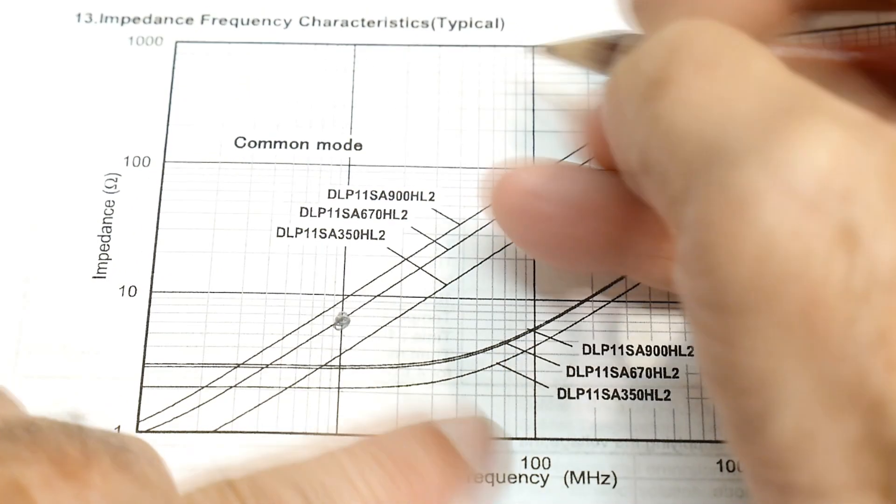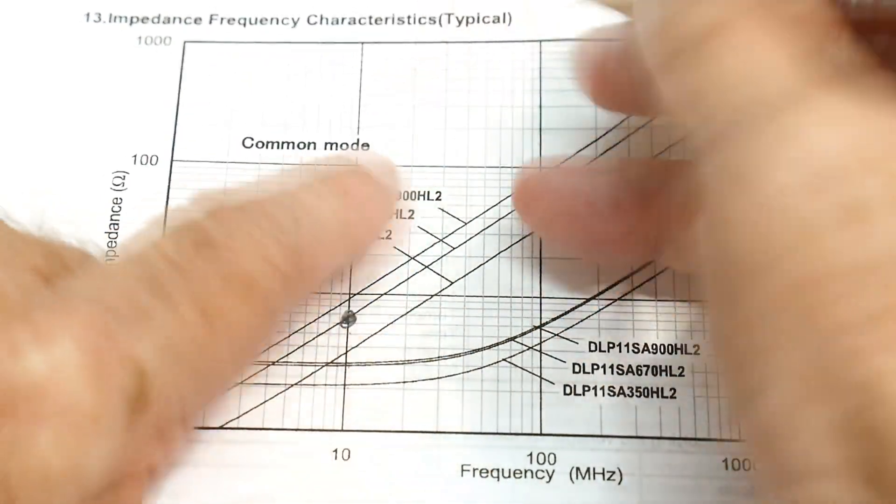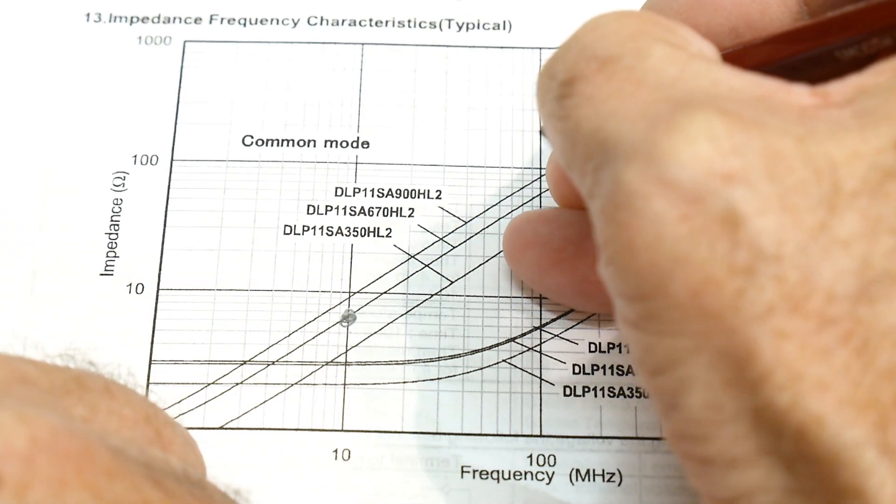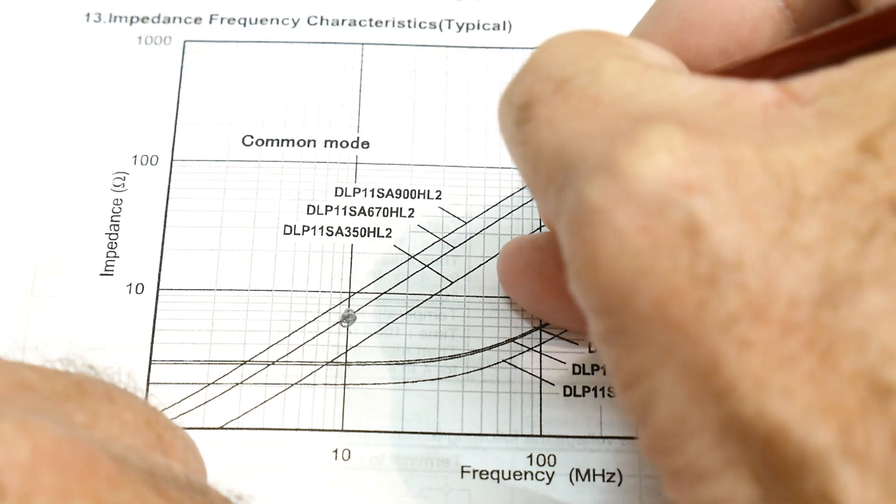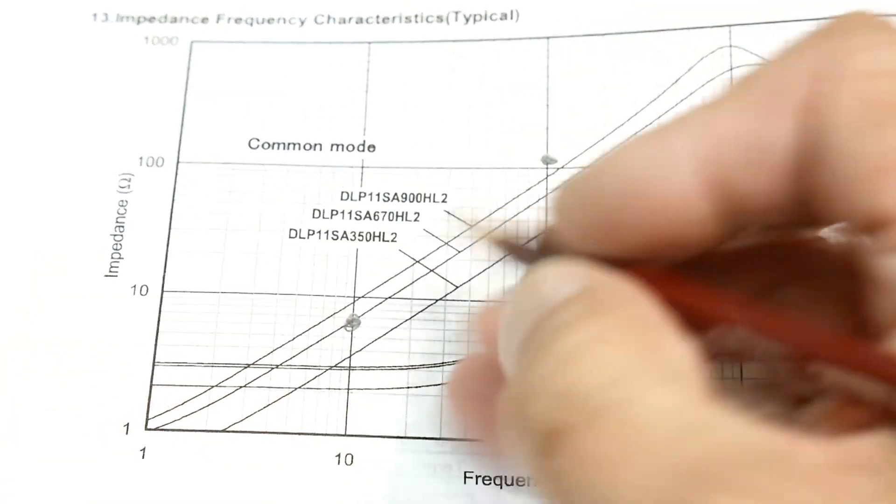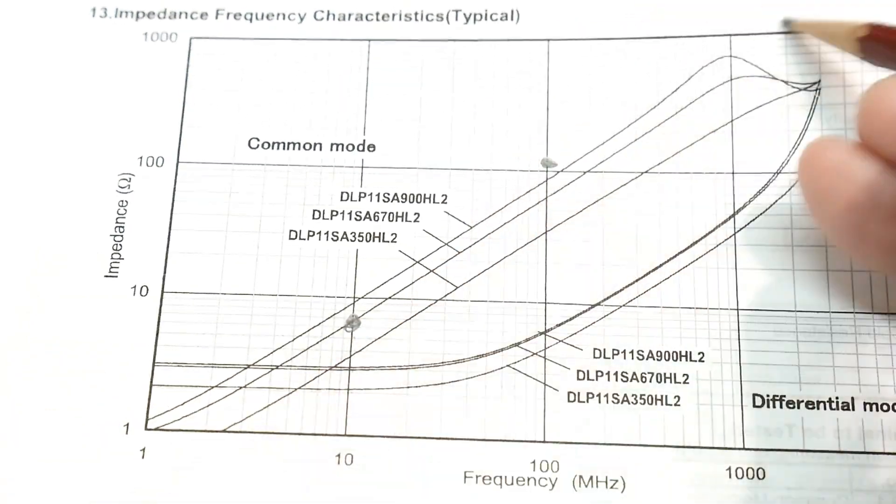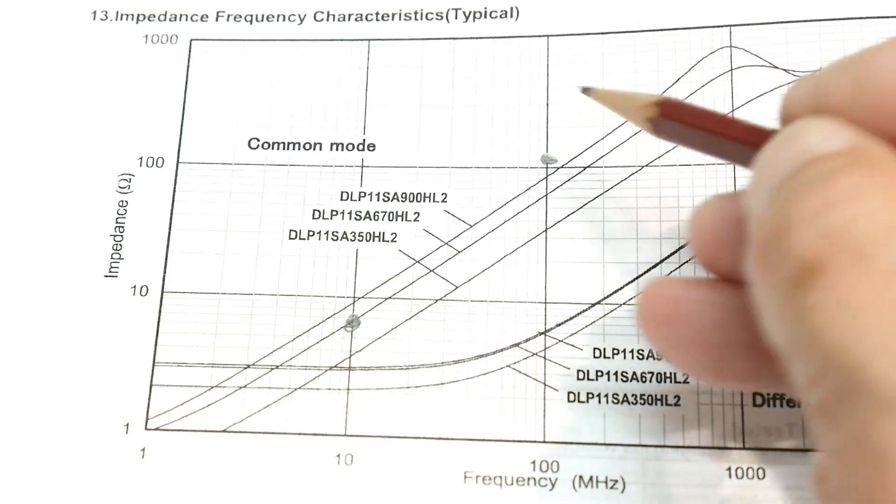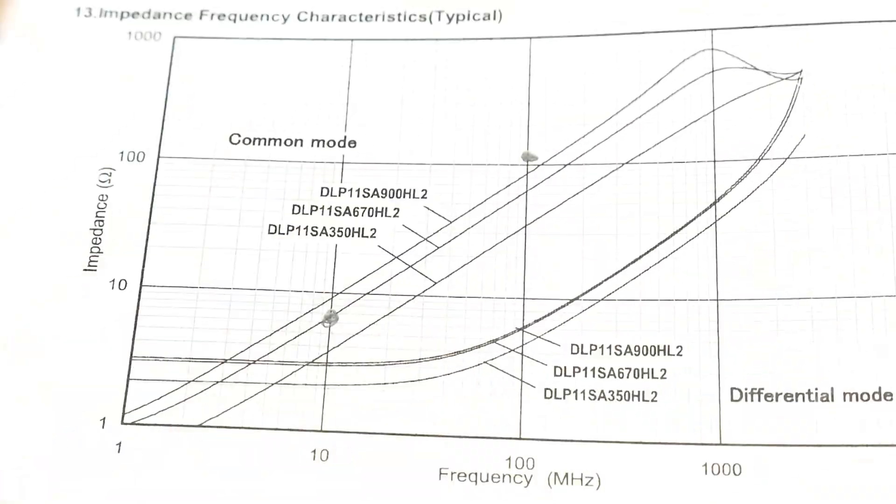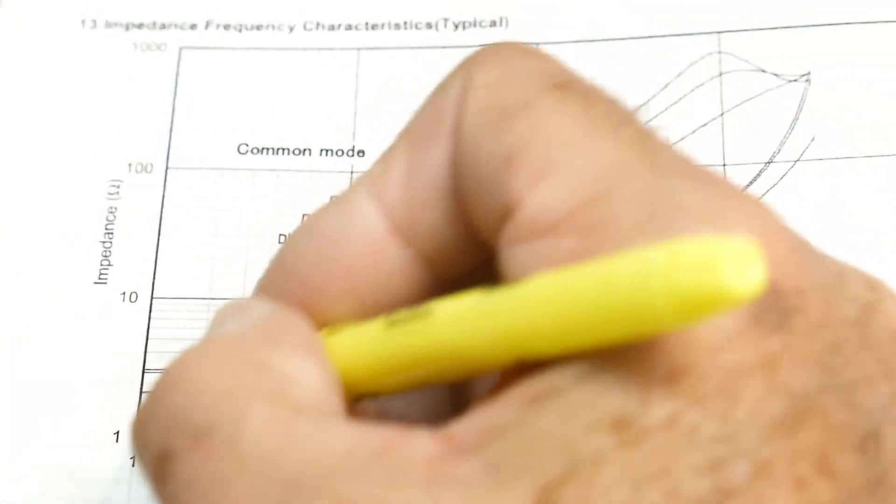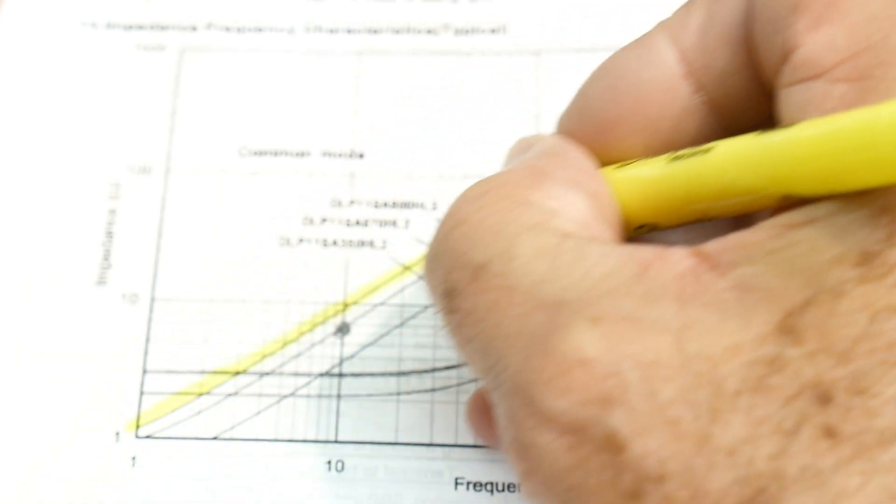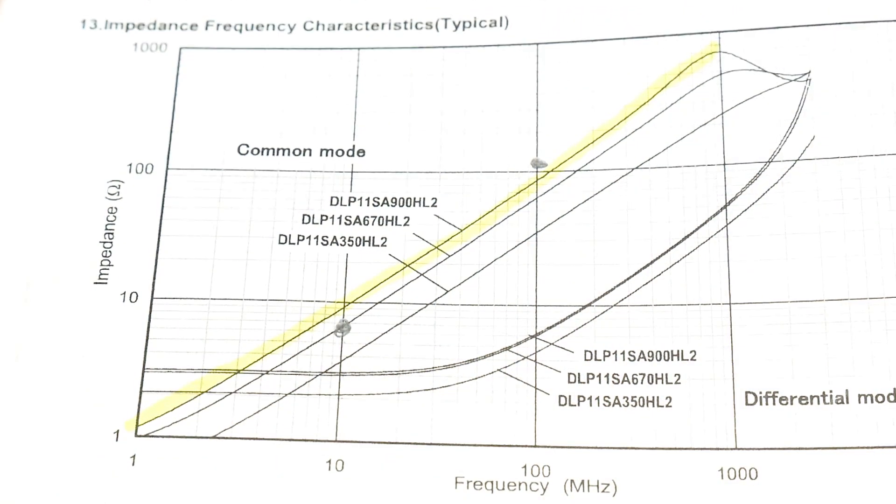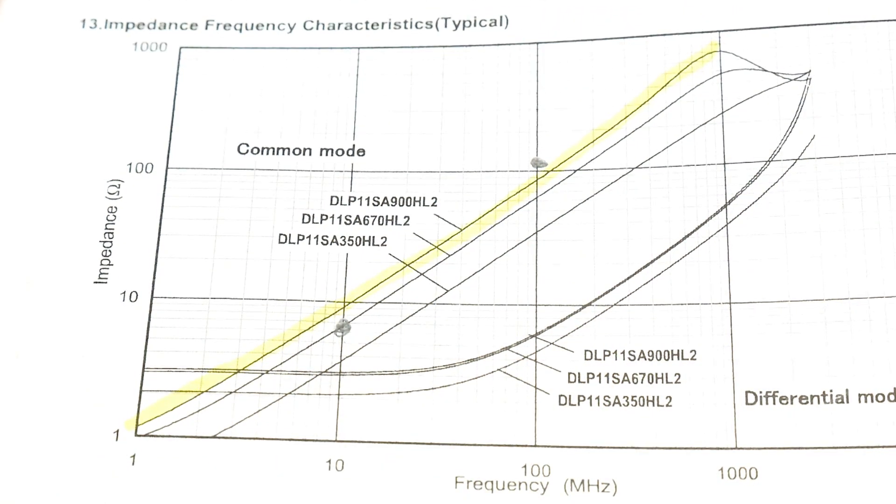Okay. So 130 ohms at 100. Alright. So here's 100 and we're measuring 130, which is about here. Alright. So we measured this point and we measured this point at this point. So we're sort of following this line and this is the data sheet line. That one right there. So we're measuring pretty good.